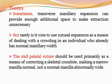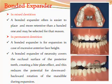Note that transverse maxillary expansion can sometimes provide enough additional space to make extraction unnecessary. The mid-palatal suture should be used primarily as a means of correcting skeletal crossbite — making a narrow maxilla normal, not a normal maxilla abnormally wide. In mixed dentition, a banded expander is easier to place and more retentive than a bonded one. In permanent dentition, a bonded expander is used in cases of excessive facial height, as it covers the occlusal surfaces of posterior teeth, creating a bite plate effect that reduces potential for downward-backward rotation of the mandible during expansion.